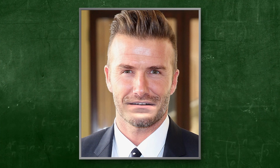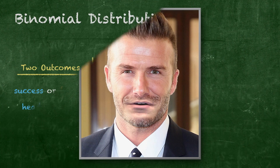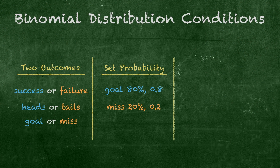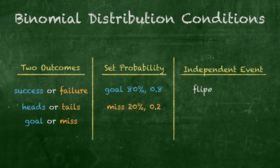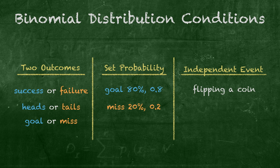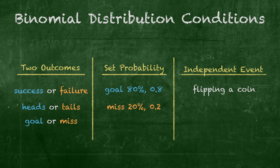Okay, so talk to me about independence. In any Binomial experiment, it's imperative that each trial is an independent event. Like when we flip a coin, the coin's got no memory of prior flips — each flip is independent of the other.